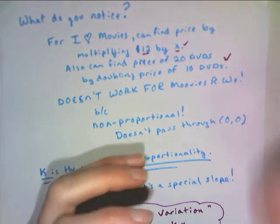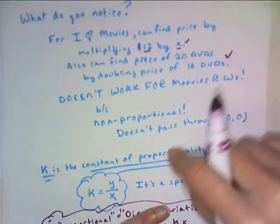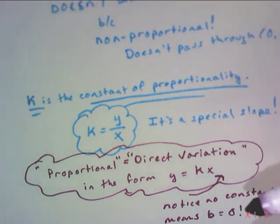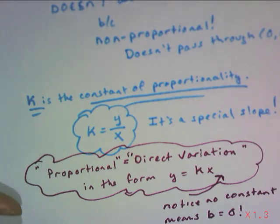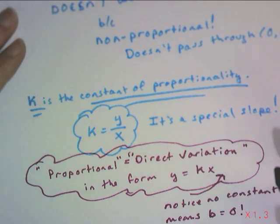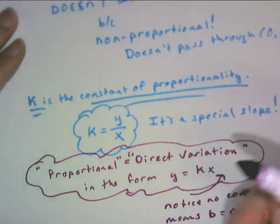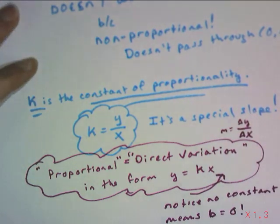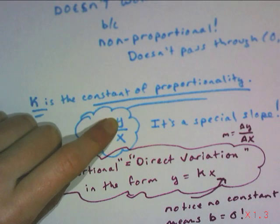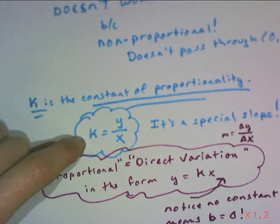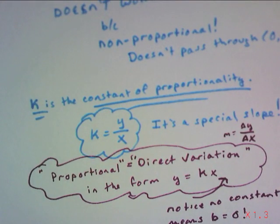So non-proportional music does not start at 0, 0. It will be 0, something other than 0. There's a new term that we're going to say today, and the new term is going to be k. So like m was slope, k is a special type of slope. That's all it is. It's a special type of slope, and it's referred to in math as the constant of proportionality. So it is slope, but instead of slope being the change in y over the change in x, these are special because if I take any value for y and I divide it by the corresponding value for x, I will get the same amount every single time in a single row.